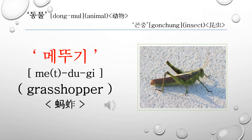This word is 메뚜기. 메뚜기 is called a grasshopper in English. Let's read it again: 메뚜기, 메뚜기.